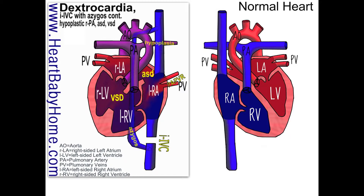We also have hypoplasia of the right branch of the pulmonary artery. Hypo means under, and plasia has to do with development. So it means when it was developing, it didn't fully develop, and that pathway isn't as big as it should be, making it harder for blood to get into the lungs through that hypoplastic blood vessel.